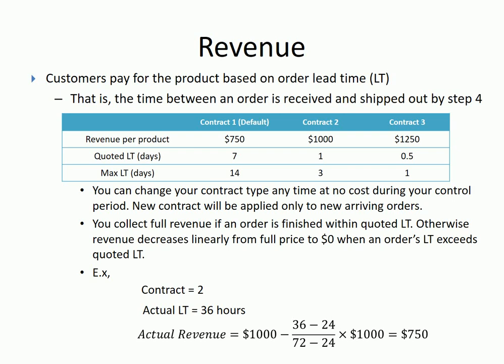The first contract is the default one. Every contract specifies three numbers: revenue per product (the full revenue), quoted lead time, and maximum lead time. If you deliver the result within the quoted lead time, you receive the full revenue. If you deliver in more than the quoted lead time, the amount collected decreases linearly depending on the actual lead time. If you deliver in more than the maximum lead time, you receive nothing — you do the job for free. For example, in contract one, if you deliver within seven days you collect $750. If you deliver between seven and fourteen days, the revenue declines based on actual lead time. If you deliver in more than 14 days, you receive nothing.